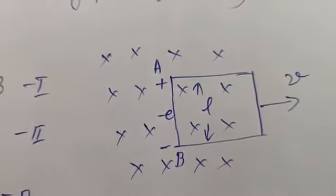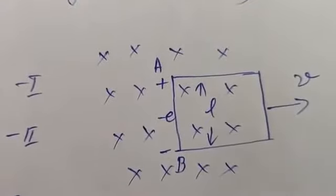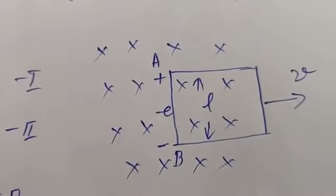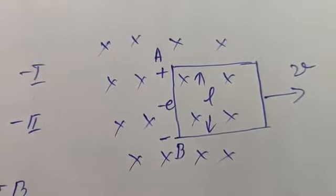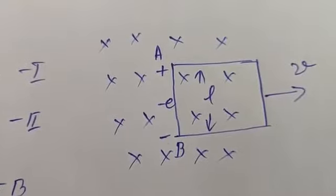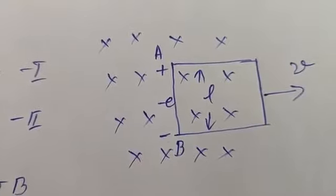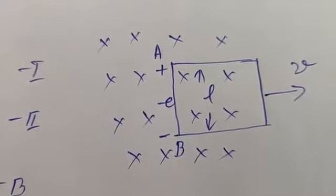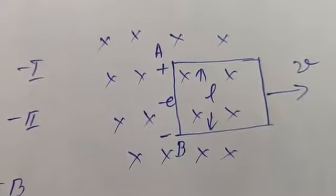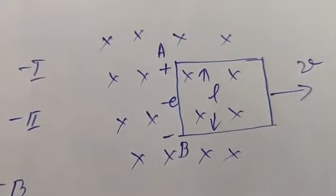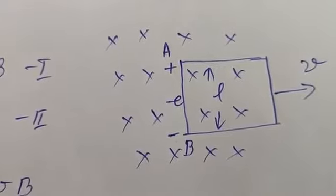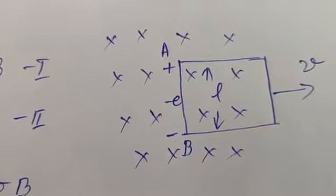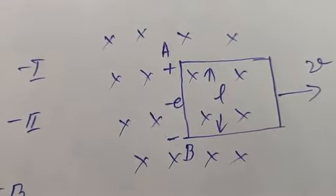In the previous lecture, we discussed about the loop which was moving in a magnetic field — moving out of the magnetic field — and we calculated the magnitude of the induced EMF. Now, there is one more method to calculate that.